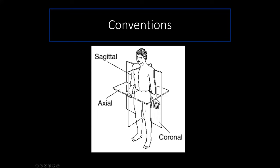CT scans are all acquired in axial slices. Reformats are then created in the sagittal and coronal planes — you can basically create any plane. The CT scanner just acquires in the axial plane, and that density information is used to reformat in any way you'd like. That's where you see sagittal and coronal reformats — they're not acquiring new series. This is in contrast to MRI, where you're usually acquiring in multiple different planes — axial, then sagittal, and so on.